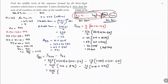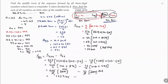For S₁₁₃: 113/2 × [206 + 112×4] = 113/2 × [206 + 448] = 113/2 × 654. Dividing 654 by 2 gives 327, so S₁₁₃ = 113 × 327 = 36,951.